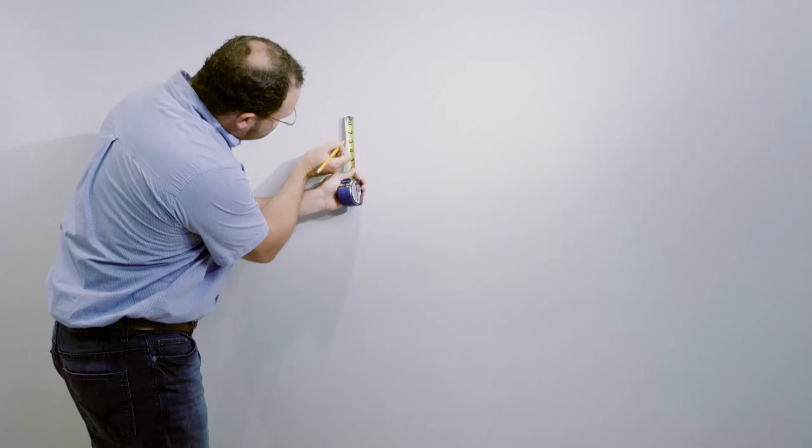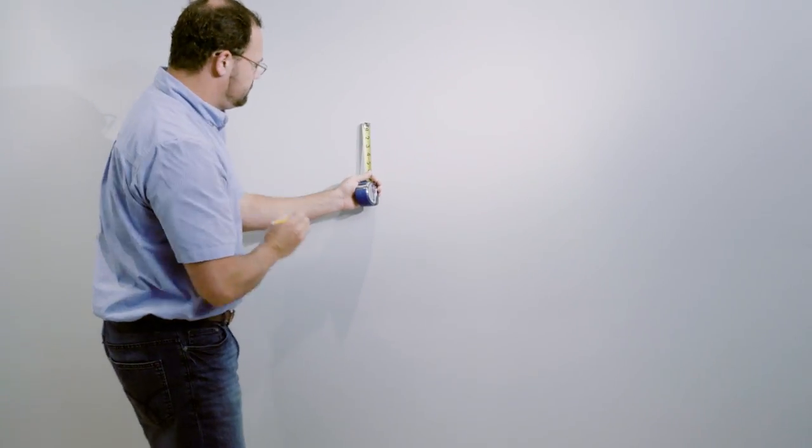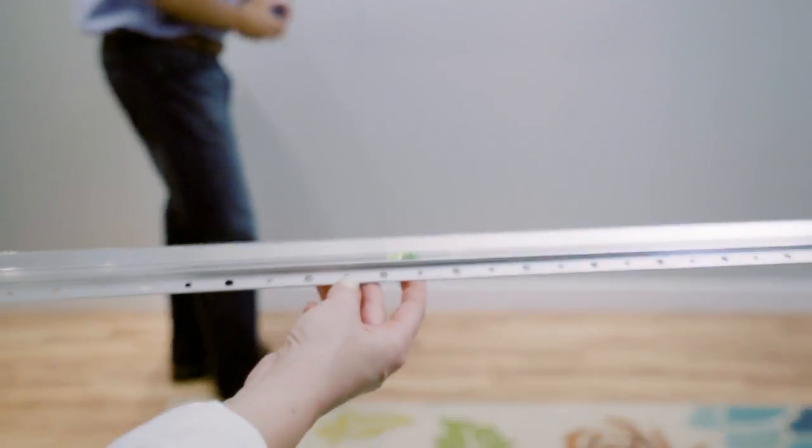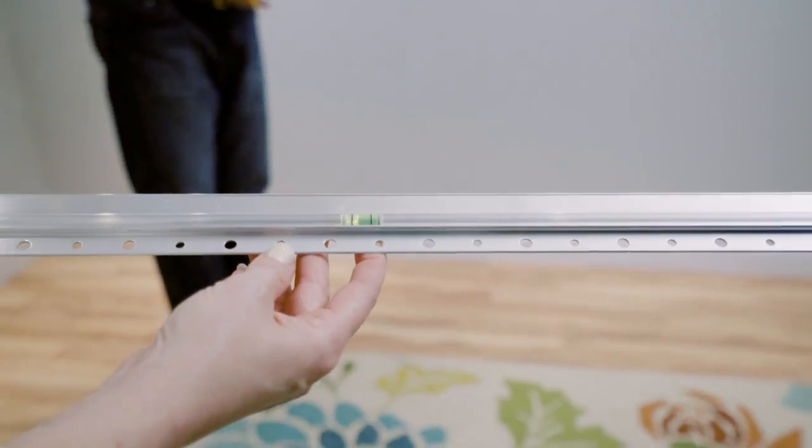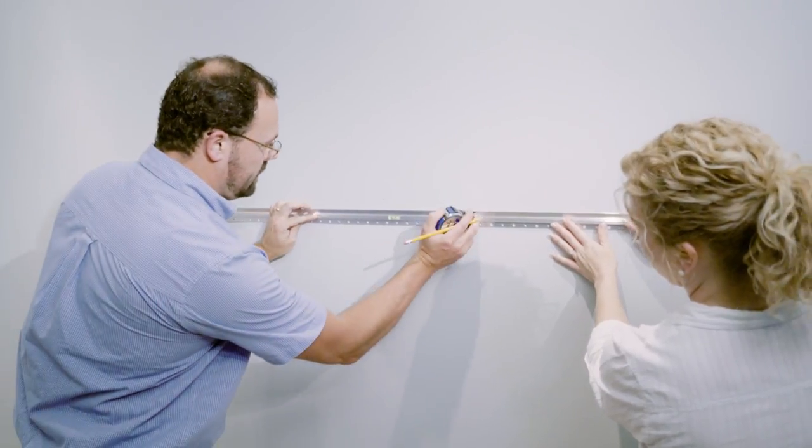Using your tape measure, make a second mark two and three eighths inches below your reference point. Place your French cleat mounting bracket on the wall with the bracket's lower edge on the second mark.